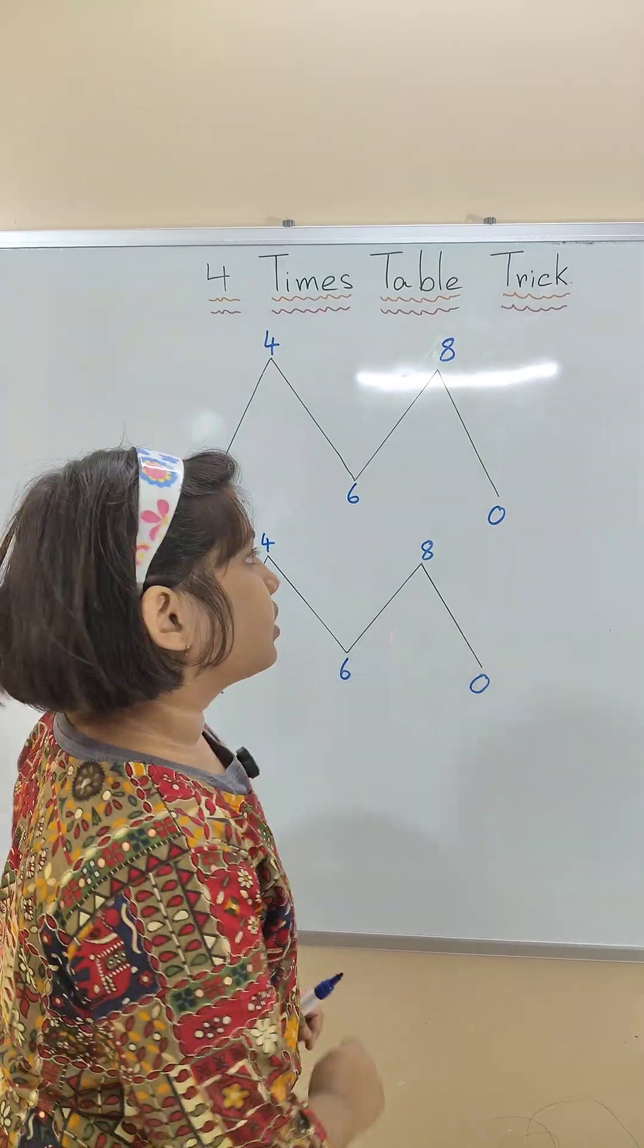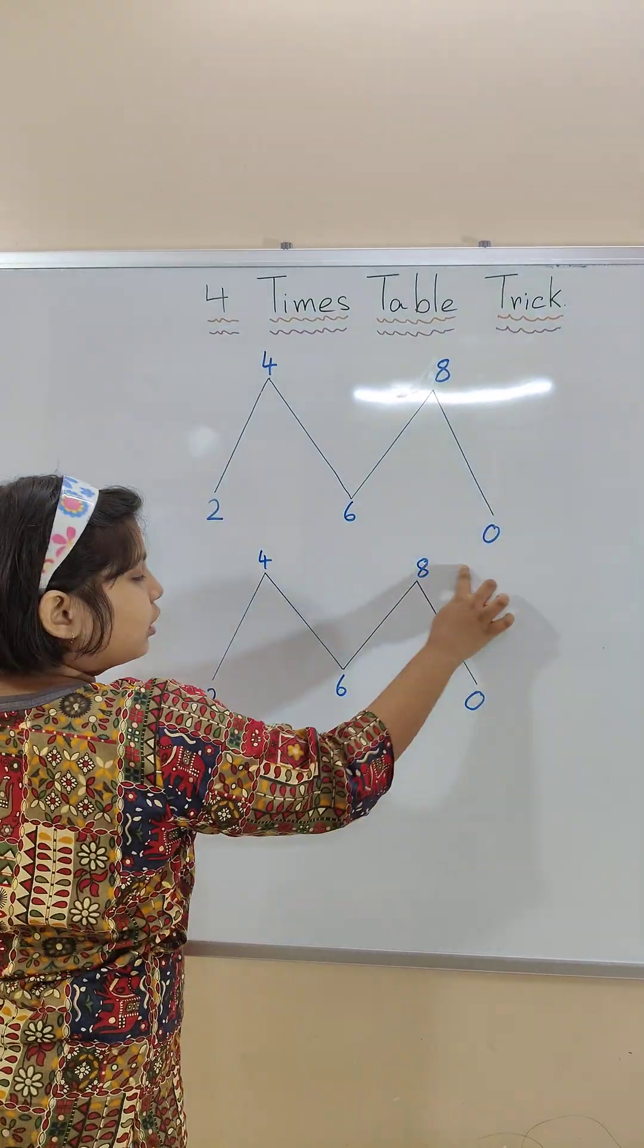Now we can see four rows. First row, second row, third row, fourth row.